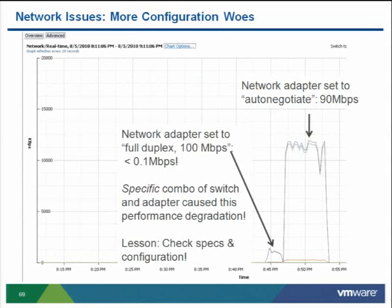A final networking example: cloning a 4 GB VM took about 24 hours. Looking at the performance chart showed terrible network utilization — less than 0.1 Mbps on a 100 Mbps link. After investigation with a colleague, we checked the duplex settings. My setting was full duplex at 100 Mbps matching the switch, but switching to auto-negotiate — letting the switch and HBA communicate to agree on settings — immediately resolved the issue and bandwidth went up dramatically. This was caused by a specific combination of hardware NIC and switch that made manual duplex setting fail.